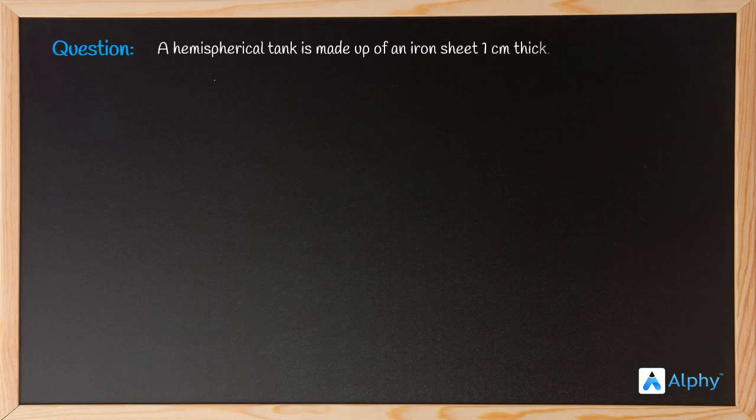Hello students, today we'll be solving a question from the chapter Surface Areas and Volume. The question says: A hemispherical tank is made up of an iron sheet one centimeter thick. If the inner radius is one meter, then find the volume of the iron used to make the tank.